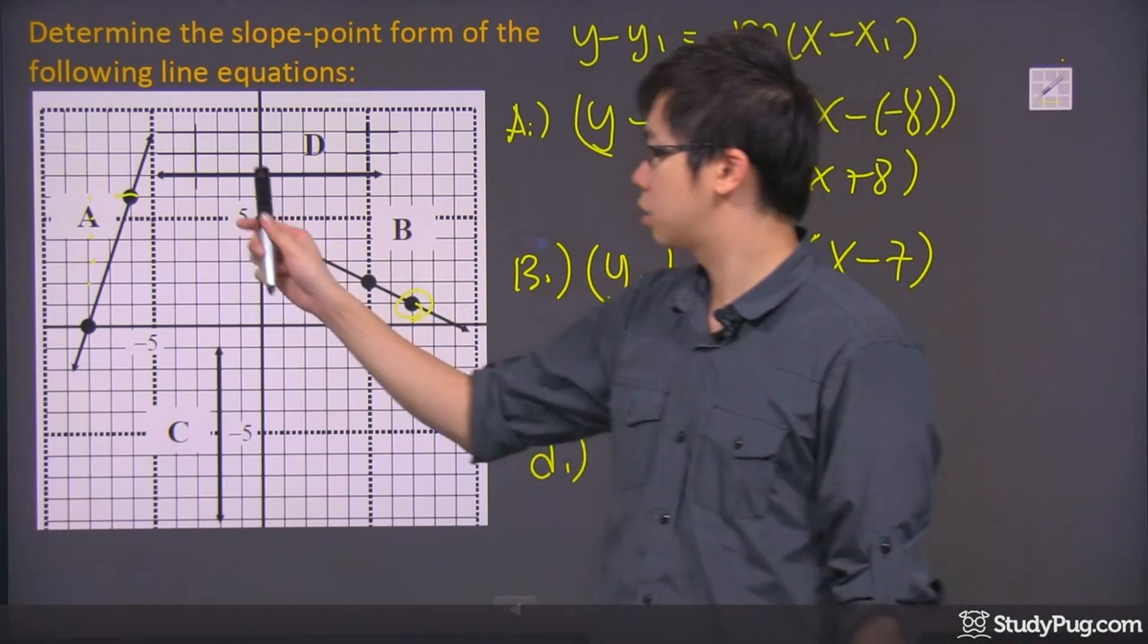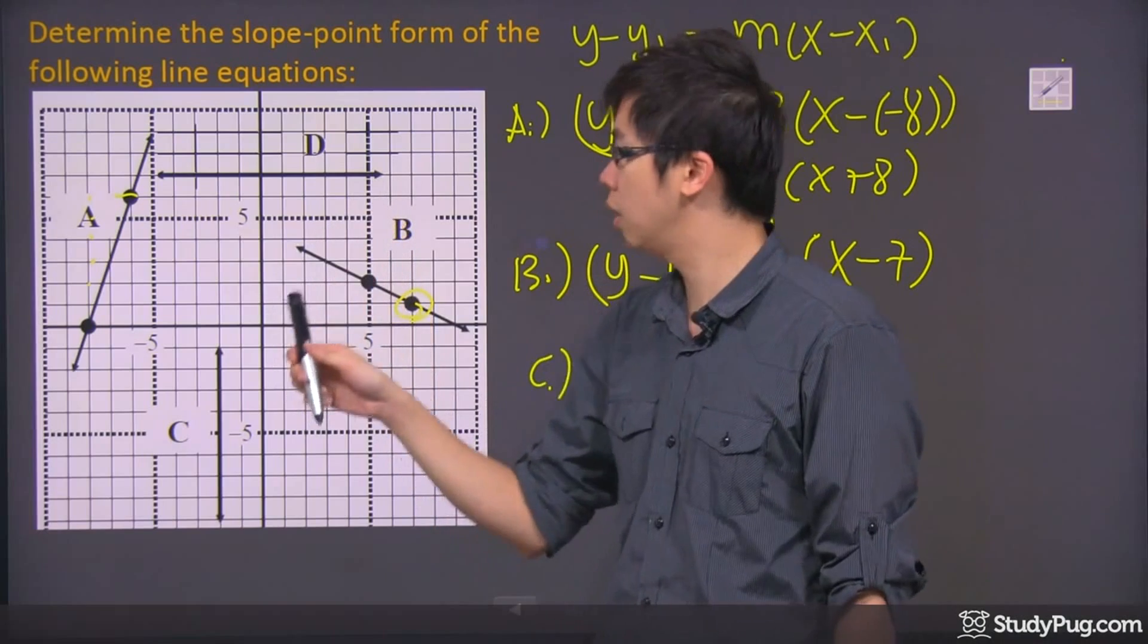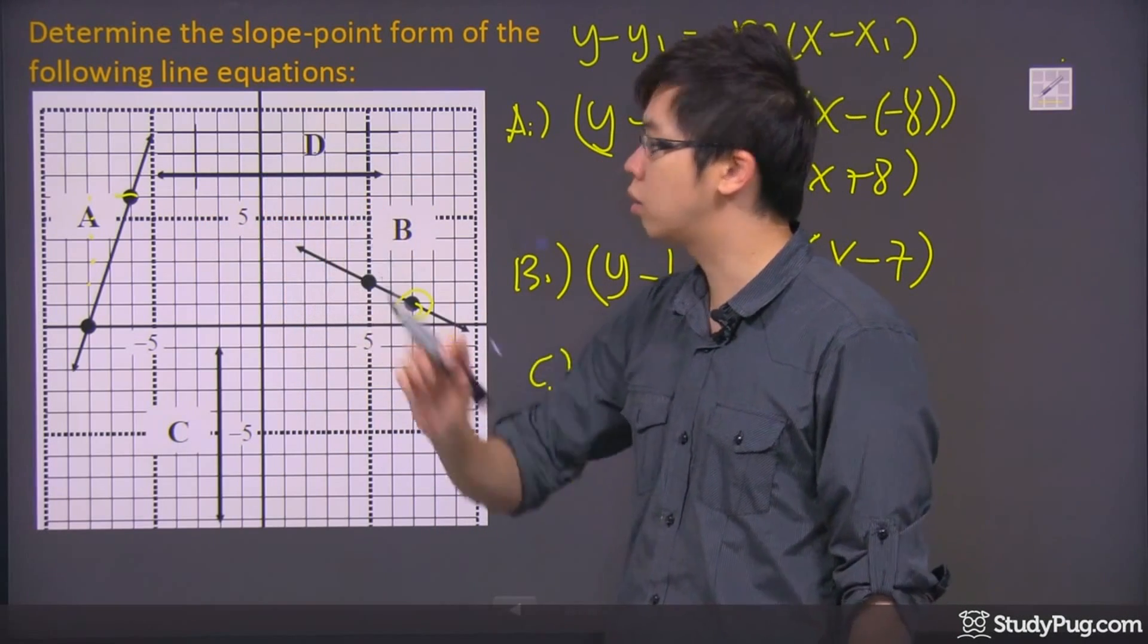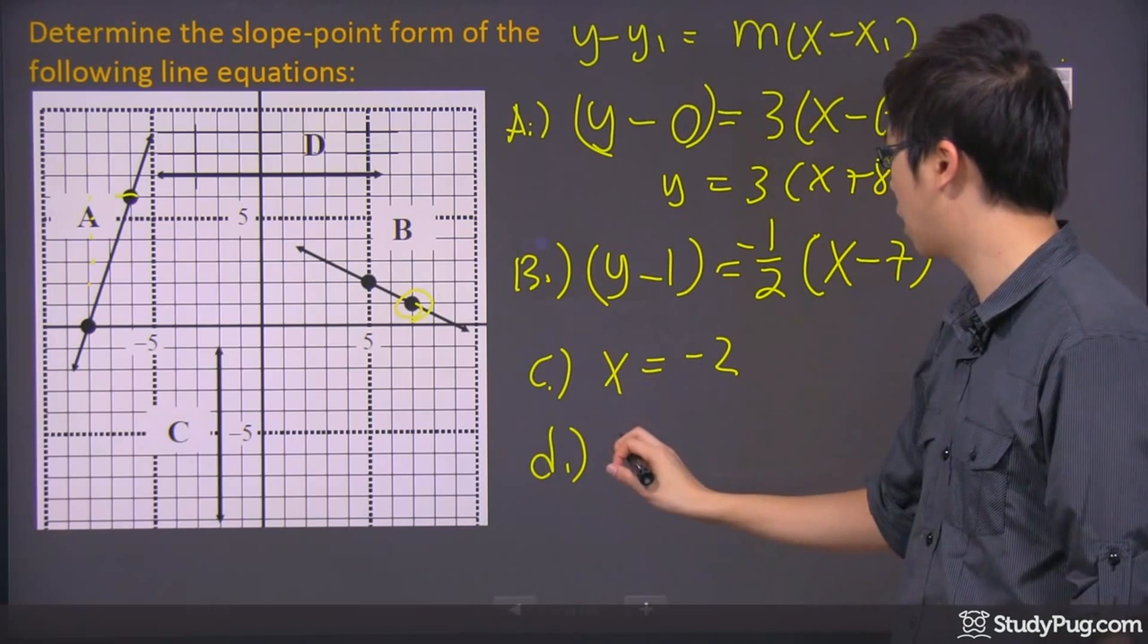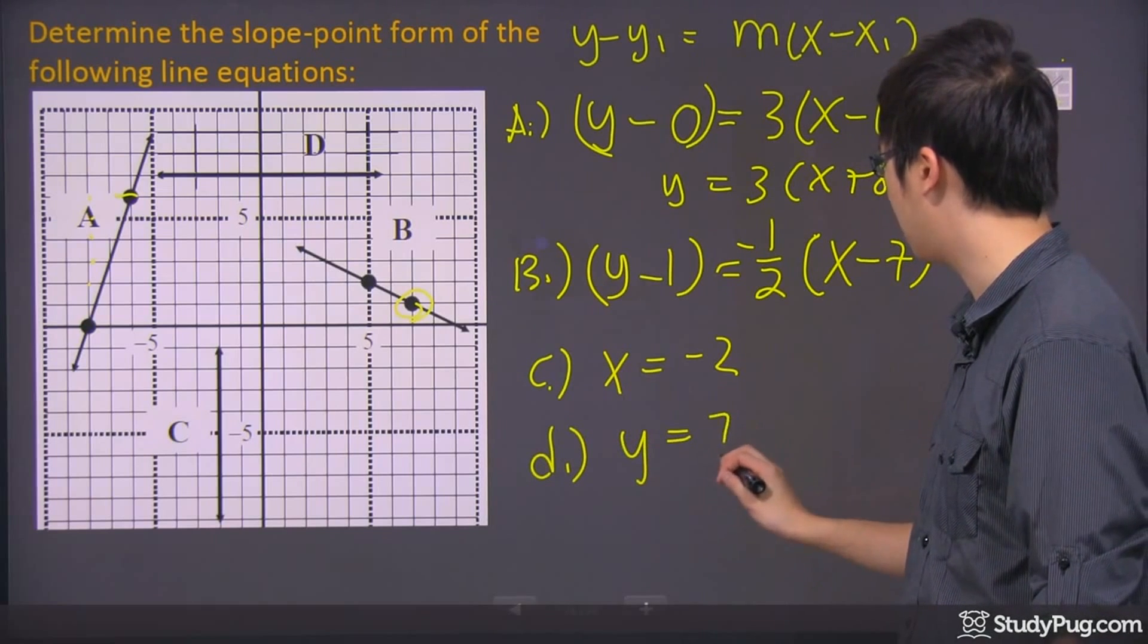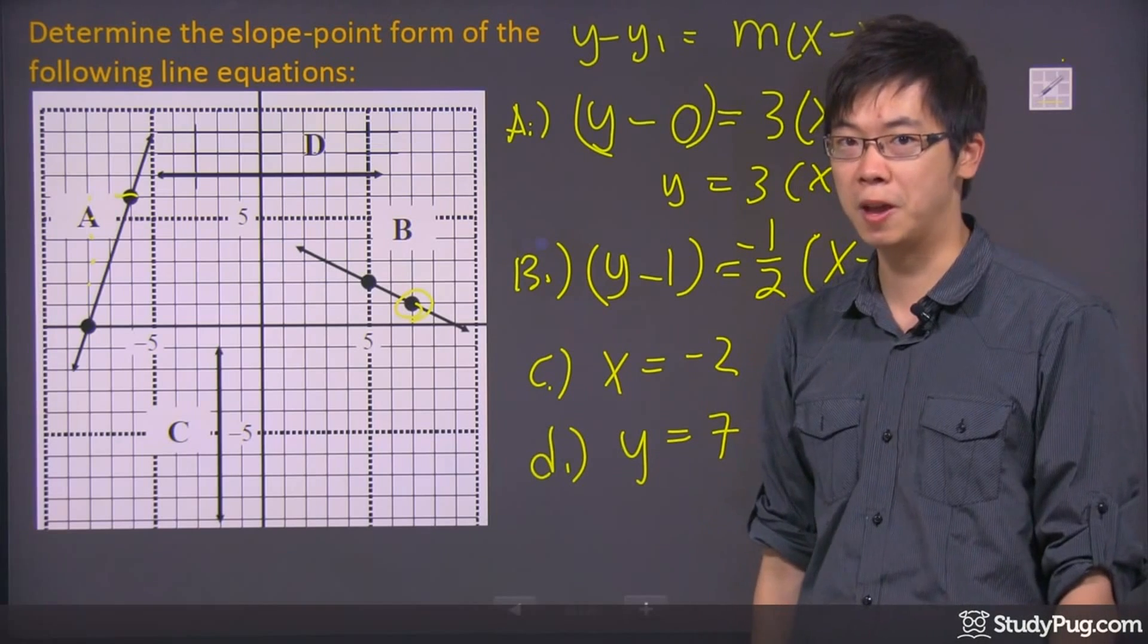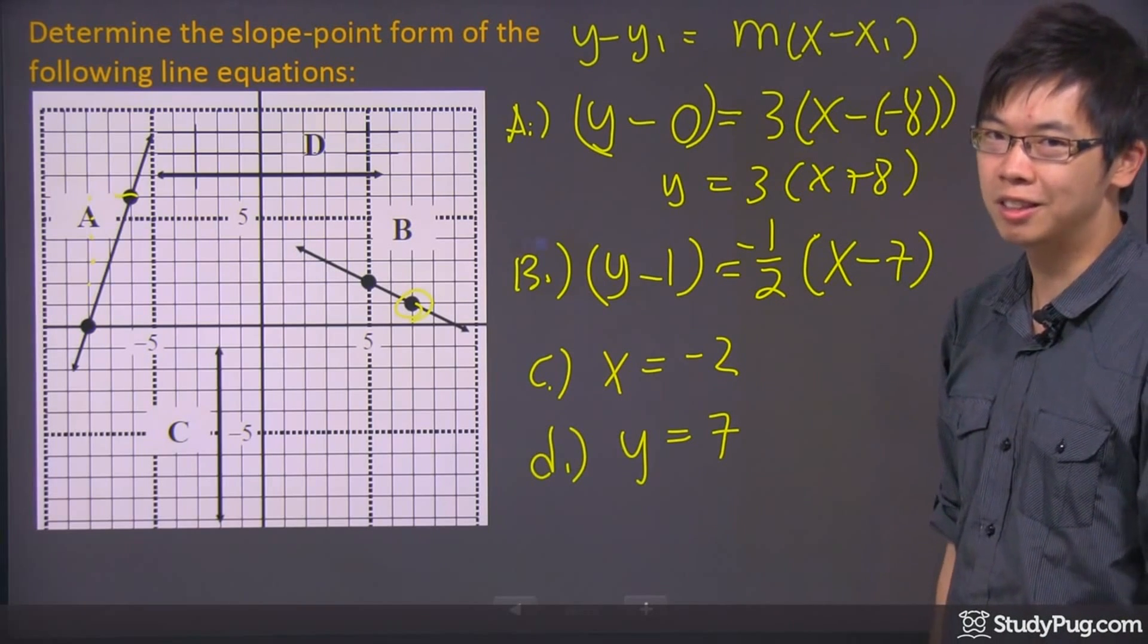For D, it's going to be a straight line across. So it's going across, happens at y equals 7. So you just have to write down y equals 7 and that's it. There's no way you can actually do the slope point form for that. So those are your final answers. Thanks for watching.